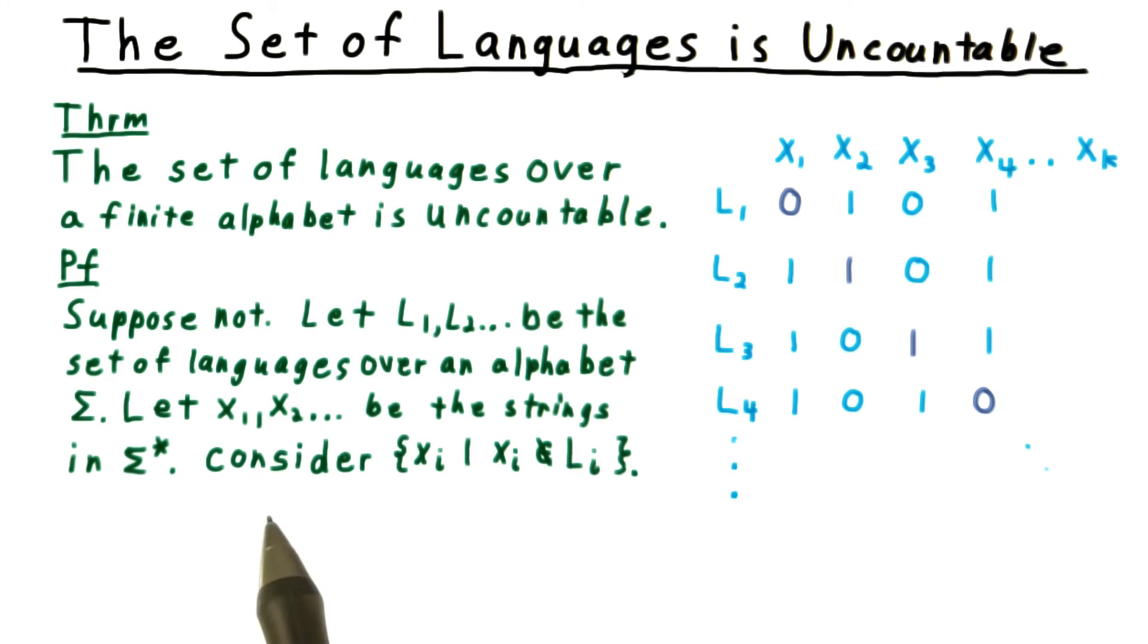Now we're going to consider a very sneaky language defined as follows. It consists of those strings xi for which xi is not in the language li. In effect, we've taken this diagonal here in the table and just reversed it.